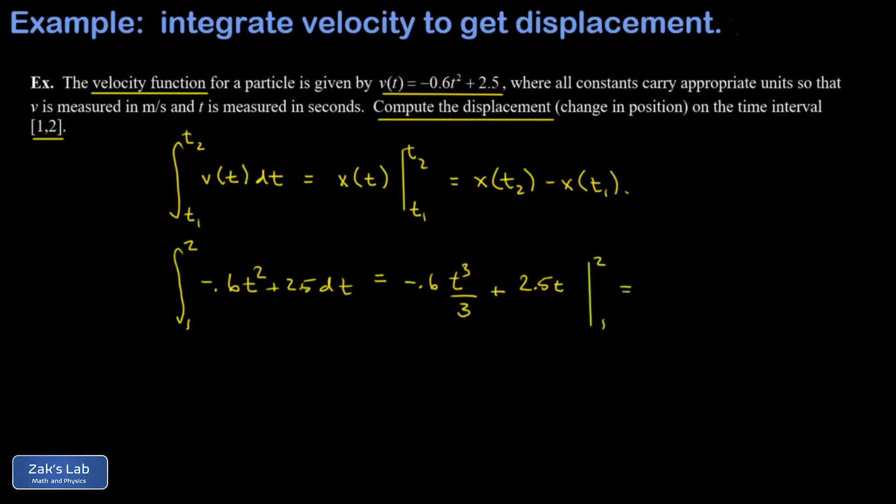We can clean things up a little bit in the first term by canceling a factor of 3, which would change that to negative 0.2t cubed in the first term.